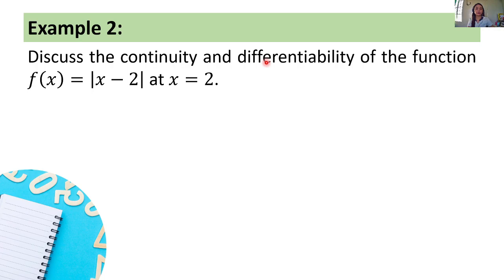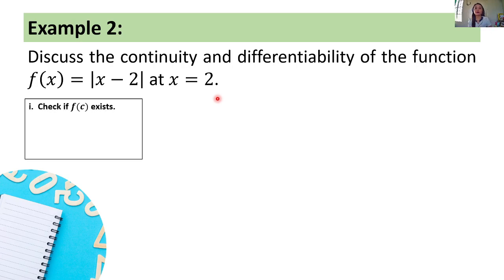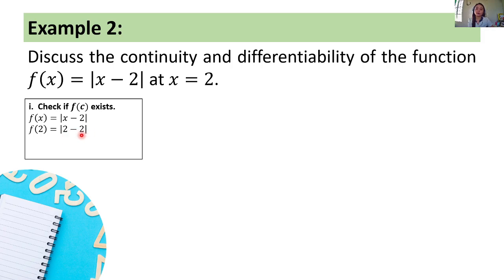Example 2: Discuss the continuity and differentiability of the function f of x equals the absolute value of x minus 2 at x equals 2. First, let's check the continuity of function f at x equals 2. We'll check three conditions. First: let's check if f of c exists. The function is f of x equals the absolute value of x minus 2, and c equals 2. We compute f of 2 equals the absolute value of 2 minus 2, which equals the absolute value of 0, equals 0. Hence, f of 2 exists and equals 0.